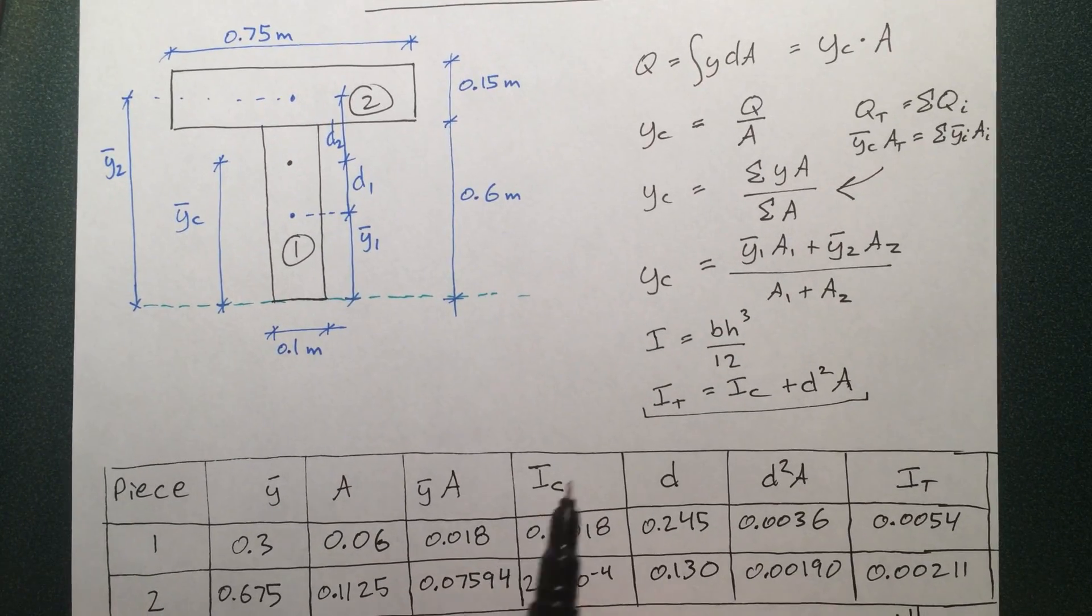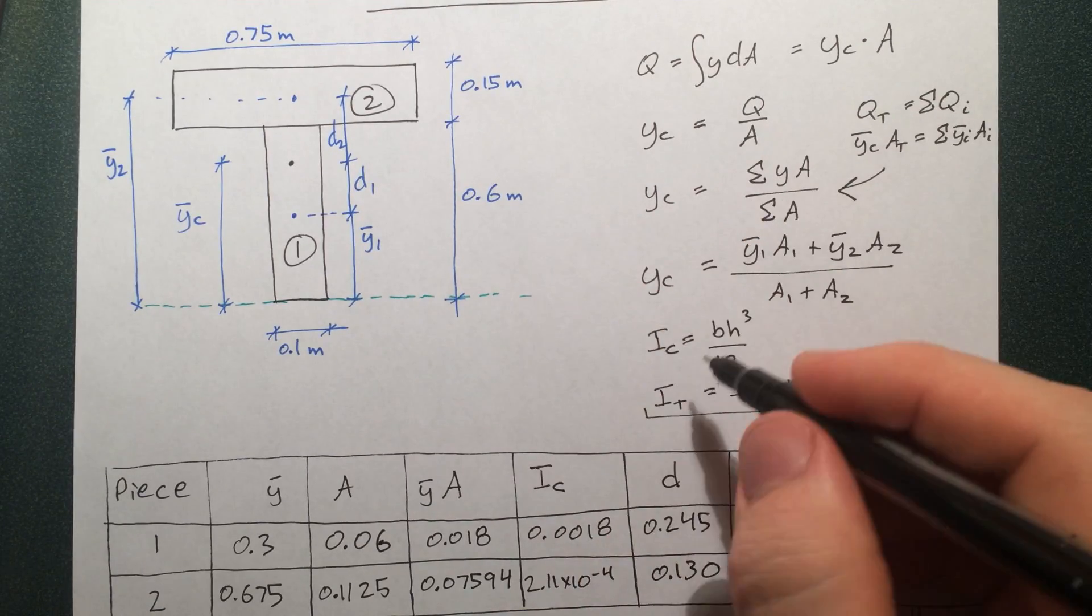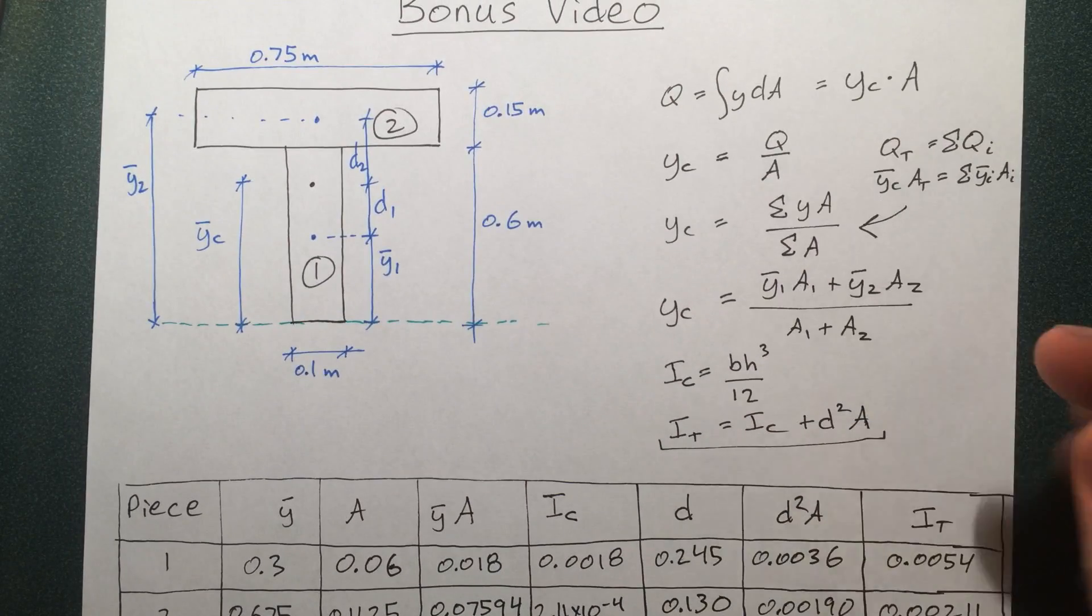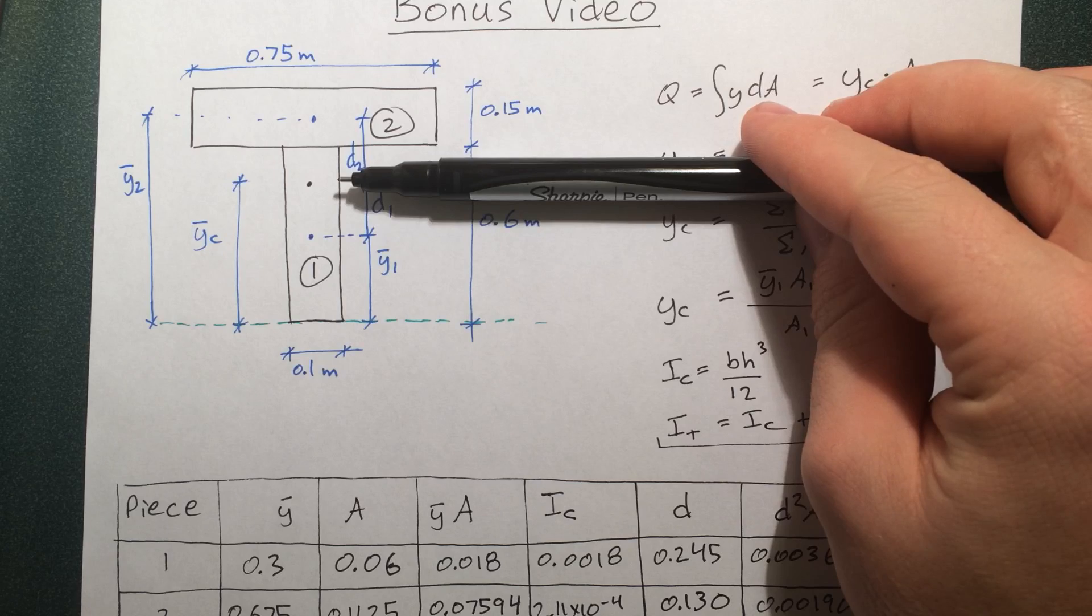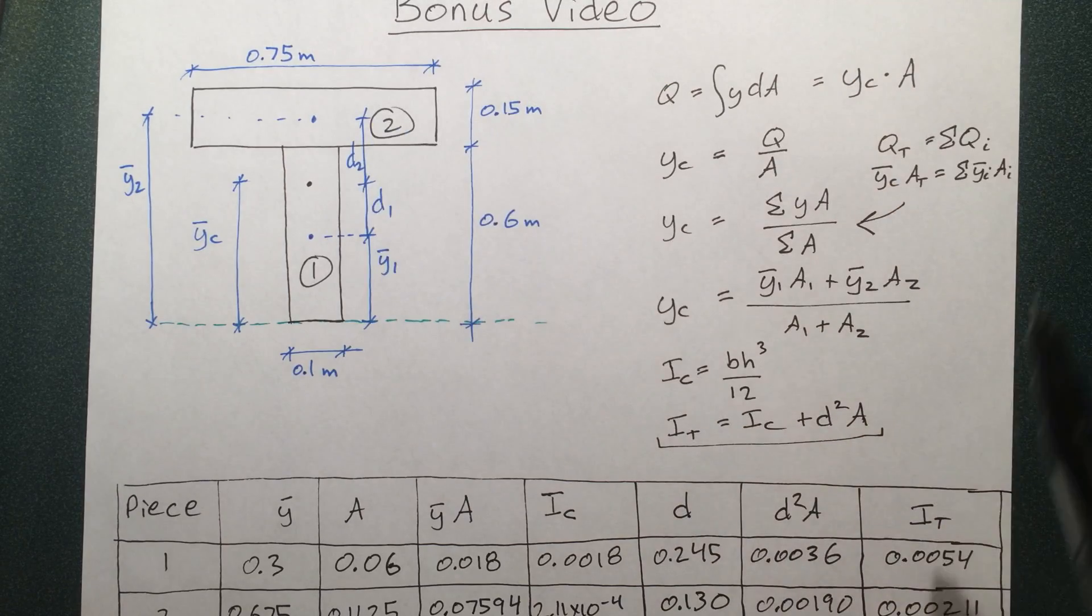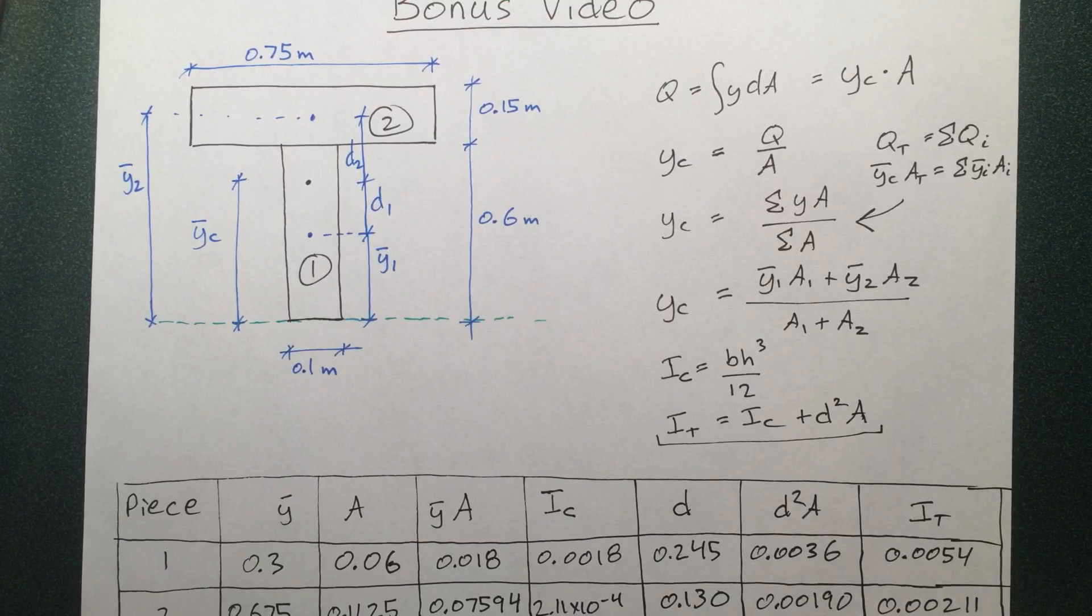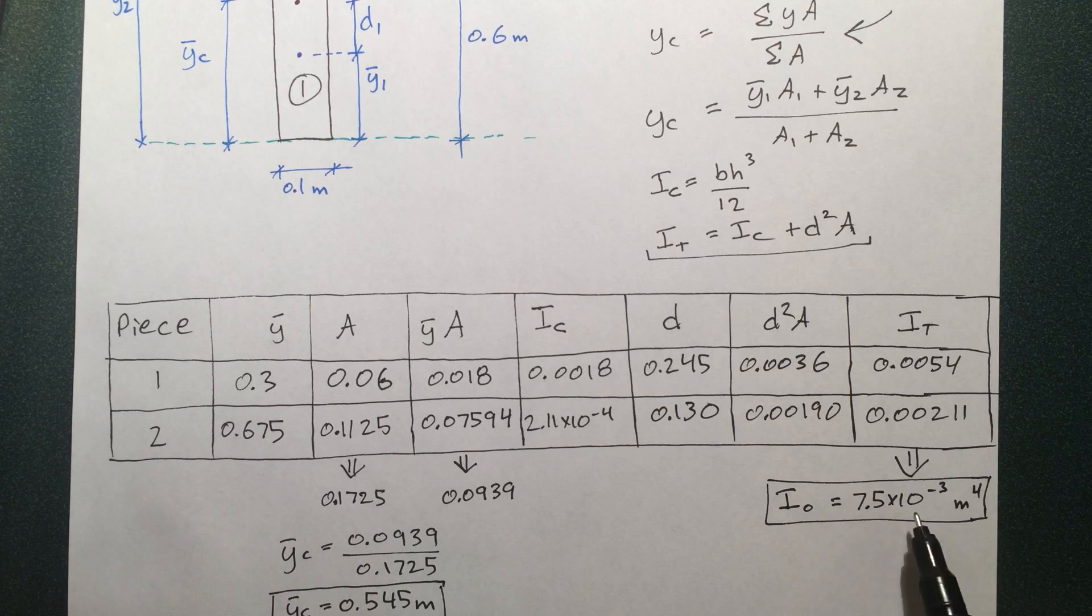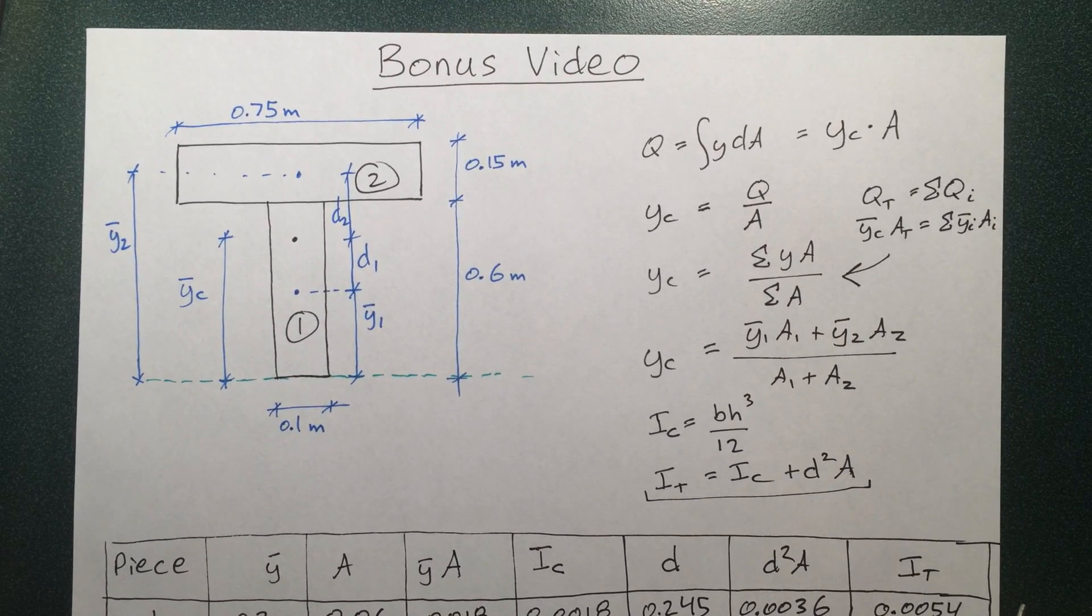For moment of inertia, we realize that the moment of inertia of a rectangular piece about its own centroid is bh³/12. Since we wanted to find the moment of inertia about the centroid of the entire thing, we need to use the parallel axis theorem, which allows us to calculate the moment of inertia if we know its own moment of inertia about its centroid, but we're displacing it a distance away. That distance away we call d, and then we can find the overall moment of inertia by adding those two together. We went through with our handy table again and solved for the total value, 7.5 times 10^-3. I hope this video helped you guys out, and we'll see you around.